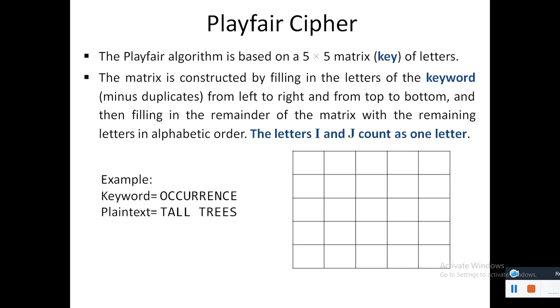Let's construct the 5 by 5 matrix with the keyword minus duplicates. So here we go: O, C occurs twice so let's fill in once, U, R again twice fill once, E, N, C, and E occurs previously.